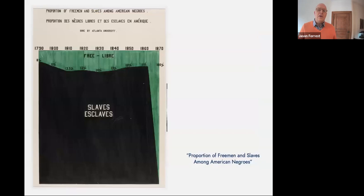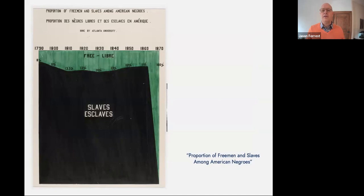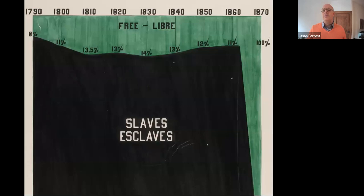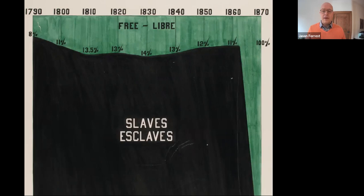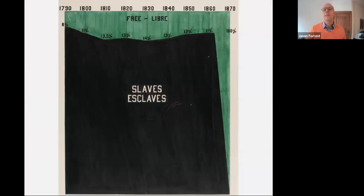Out of the 60 charts in the exhibit, I personally find 'The Proportion of Freedmen and Slaves Among American Negroes' to be one of the most compelling. The label 'Slaves' arranged inside the mountain's black area is still a kick in the gut. The green ribbon at the top shows the ratio of free to enslaved African Americans over roughly a century. By putting the focus on the freemen both in the colored ribbon and by listing percentages of each decade, it emphasizes their minority in comparison to the massive black area below.